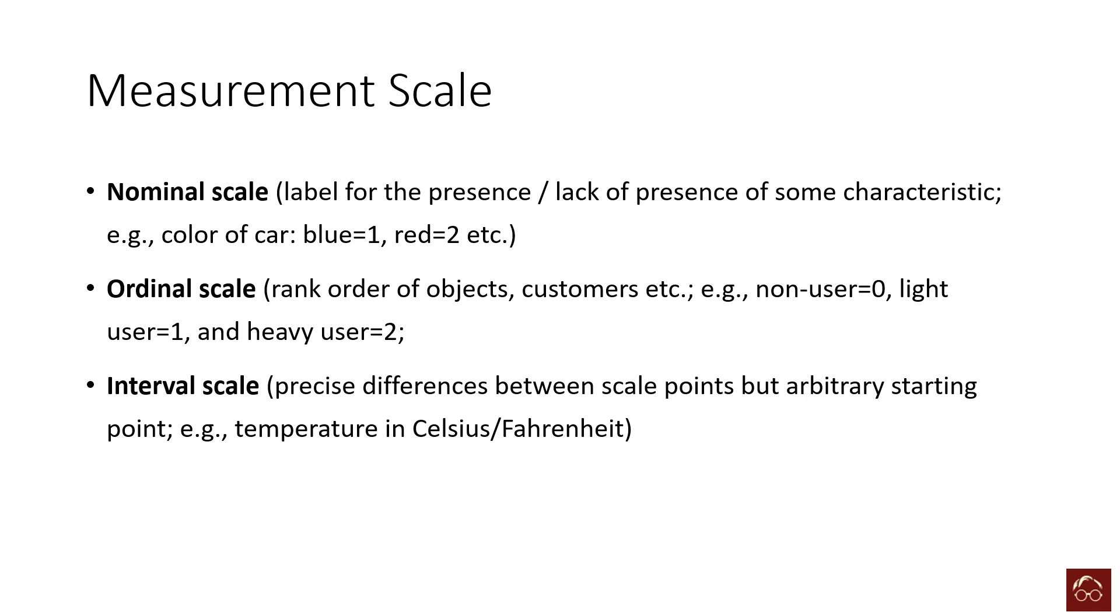But for interval scale, the differences between the different numbers of different ranks will be exactly the same. One example is temperature: the difference between 5 degrees to 10 degrees is 5, and then 10 degrees to 15 degrees is also 5. So the differences between each of the numbers mean exactly the same value.